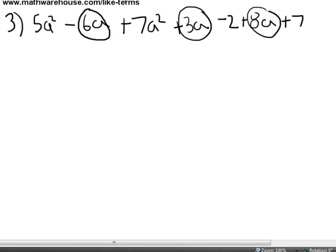Say negative 6a plus 3a plus 8a. All right, let's put that over in one spot. Negative 6a plus 3a plus 8a. We know that the variable will be a, and then we just add up our coefficients. All right, negative 6 plus 3 is negative 3 plus 8 is 5.